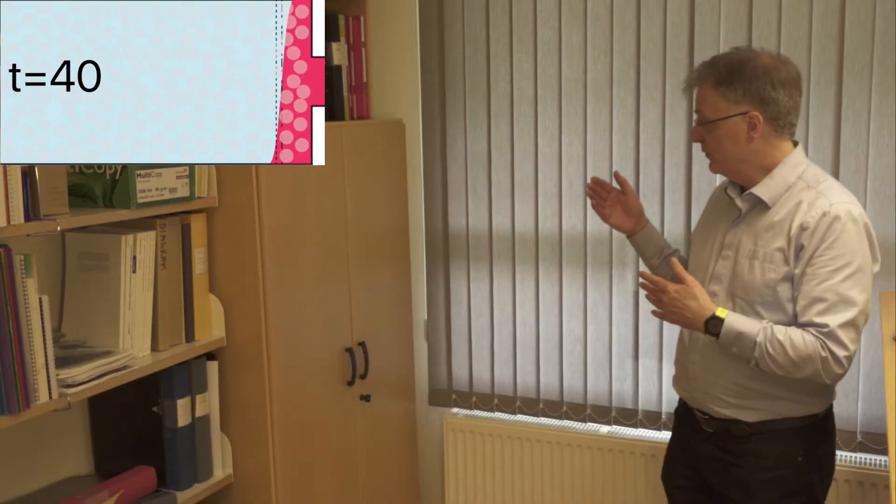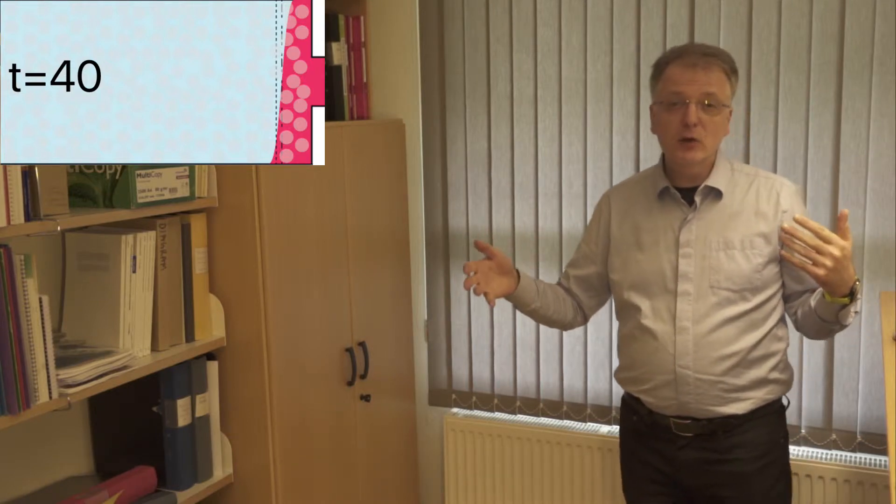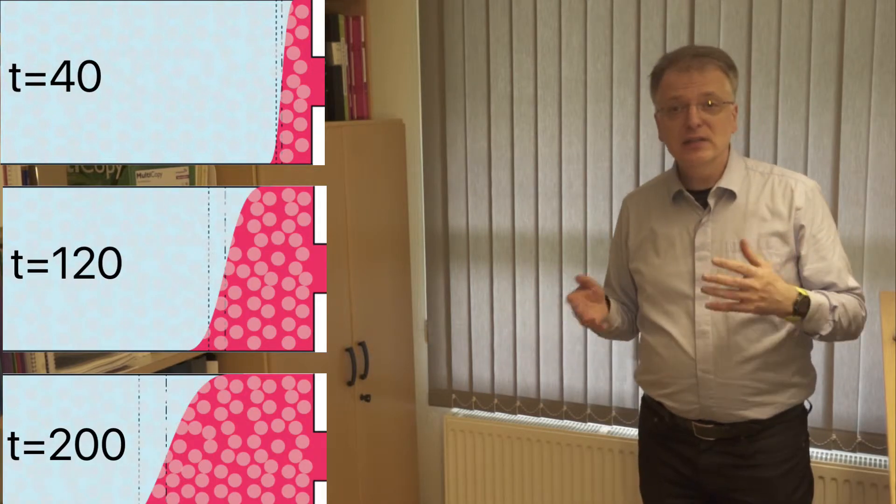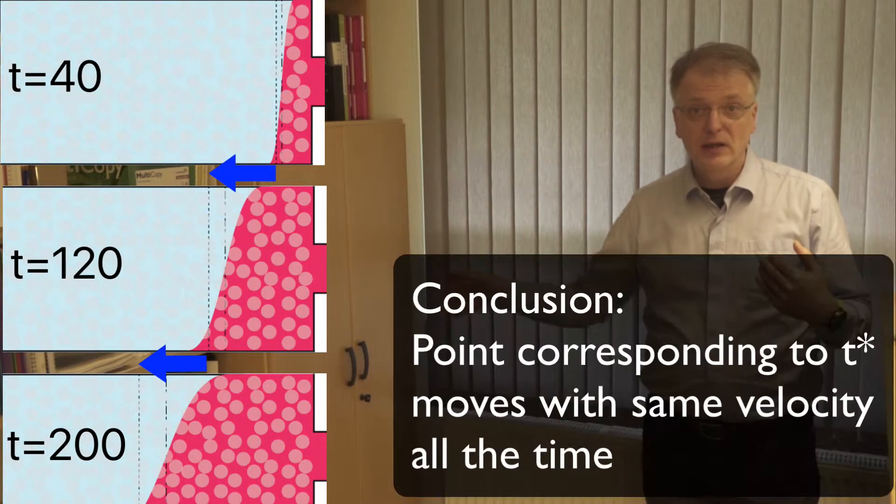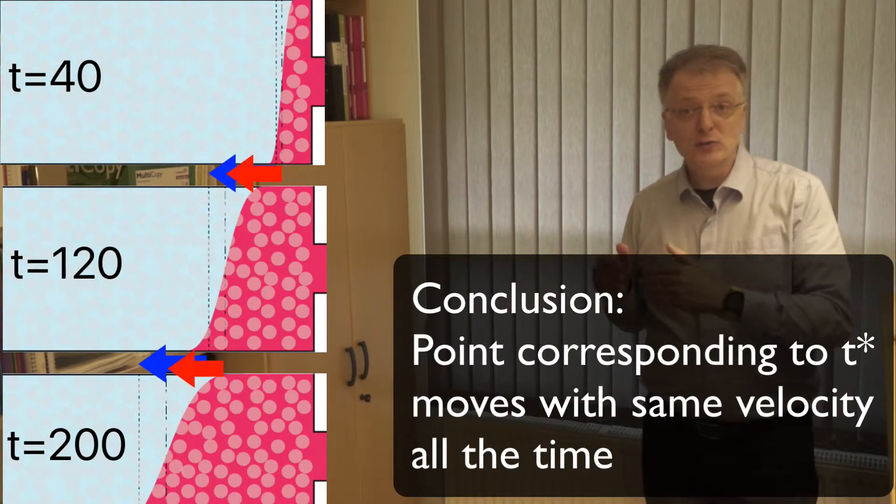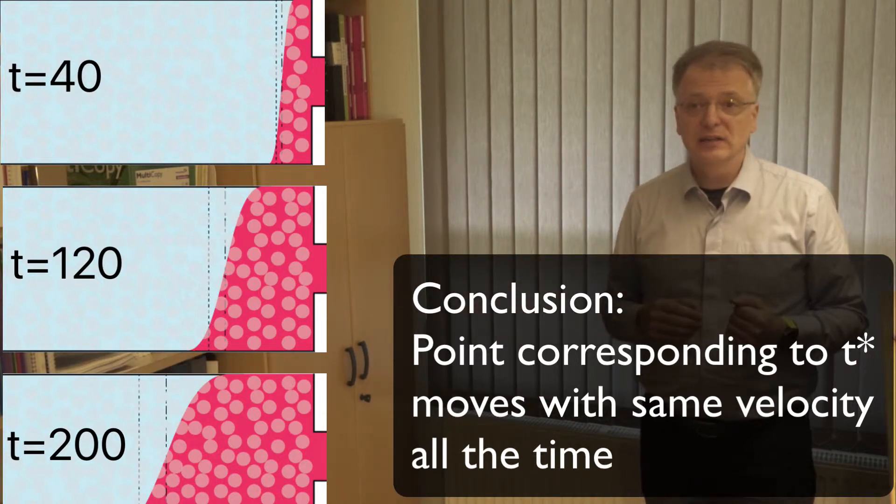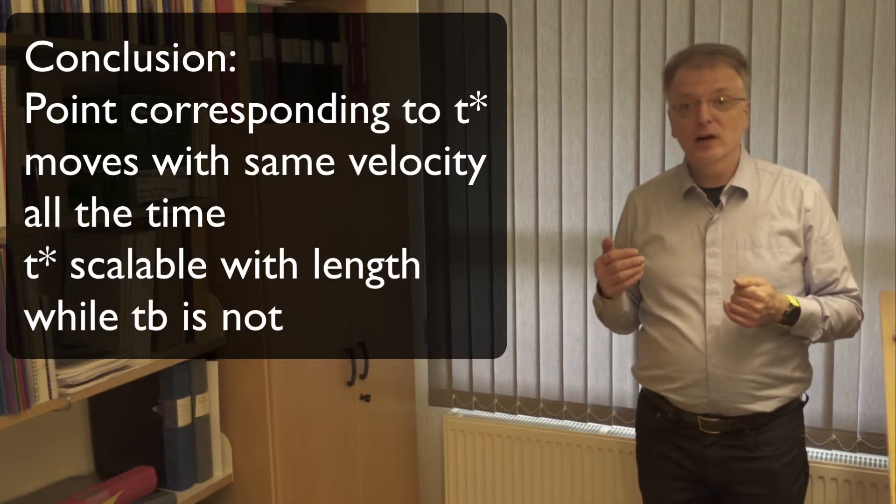Let us look a little bit closer at three different points in time. After a short time, 40 time units here, the diffusion has not had time to spread out the red substance. If we compare with the situation after another 80 time units and after yet another 80, we see that the line corresponding to T-star moves at the same velocity all the time, but the line that corresponds to TB moved faster initially and then slowed down to the same velocity as the line corresponding to T-star. From this we draw the conclusion that T-star is scalable with column length while TB is not.